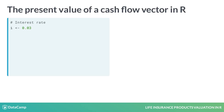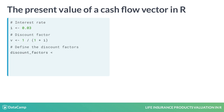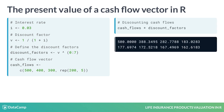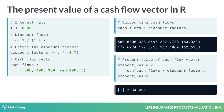Define the interest rate i of three percent and the corresponding discount factor v. The vector discount_factors stores the applicable discount factors obtained by raising v to the power zero to seven, and cash_flows stores the cash flows from time zero to seven. By multiplying both vectors element-wise, you obtain the present value of each cash flow. For example, 200 euro at time seven is worth 162.6 euro at the present time. Finally, sum the discounted cash flows to obtain the present value of the entire cash flow vector.